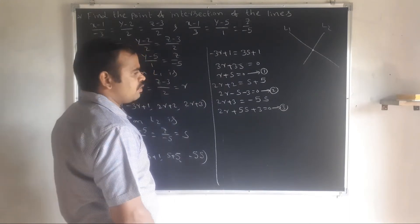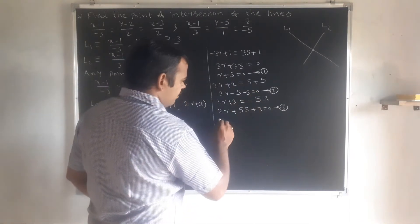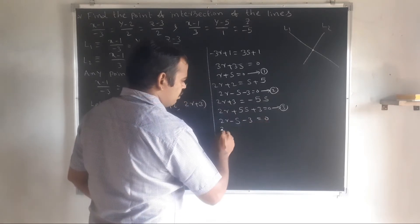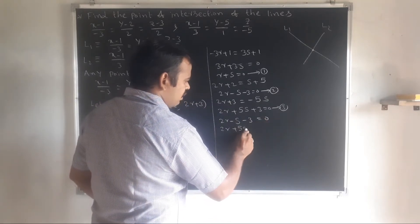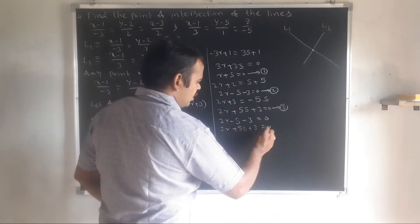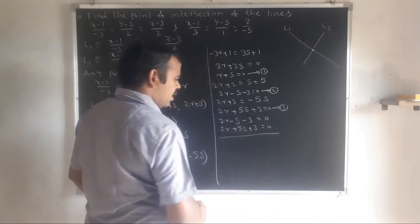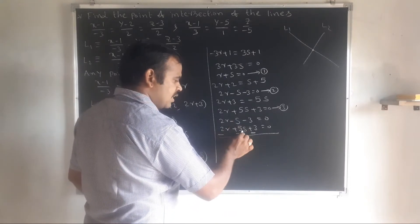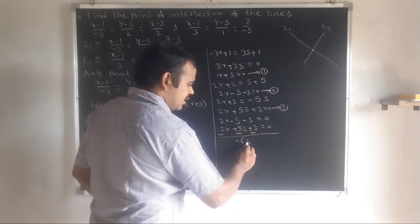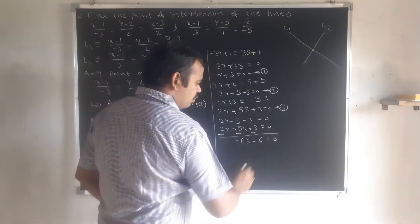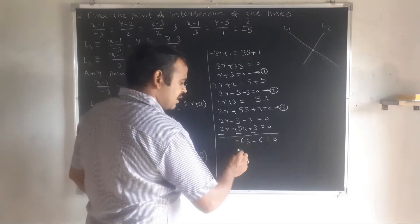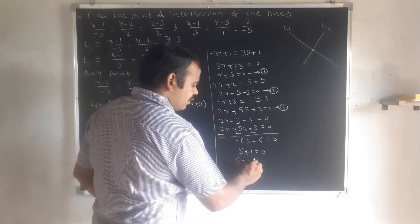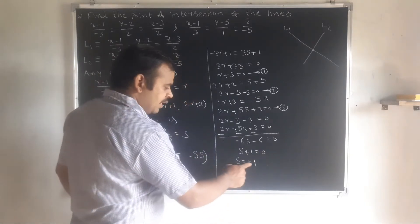Let's solve these equations using equations 2 and 3. Subtracting equation 3 from equation 2: (2r minus s minus 3) minus (2r plus 5s plus 3) equal to 0. The 2r cancels. Minus s minus 5s gives minus 6s minus 6 equal to 0, so s plus 1 equal to 0, therefore s equal to minus 1.